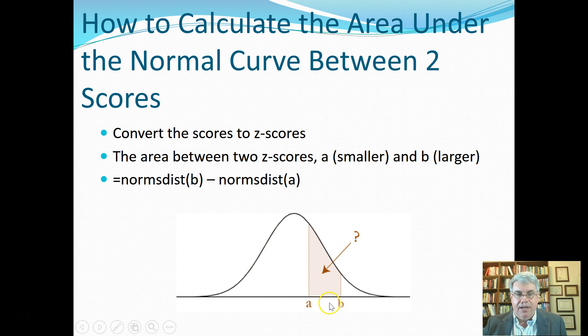So like maybe this was a task where the average score was 80 with a standard deviation of 10. A looks like it might have been 85 and B looks like 95. So the question might be what percentage of people got between an 85 and a 95? That's what we want to be able to do is calculate this area, which will be the percentage of people between these two scores.